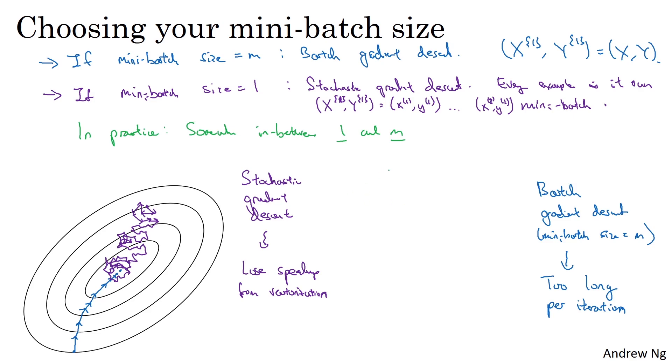So what works best in practice is something in between, where you have some mini-batch size that's not too big or too small. And this gives you, in practice, the fastest learning. One is that you do get a lot of vectorization. So in the example we used in the previous video, if your mini-batch size was a thousand examples, you might be able to vectorize across a thousand examples, which is much faster than processing examples one at a time. And second, you can also make progress without needing to wait till you process the entire training set.